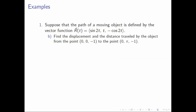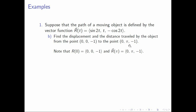Let's move on to letter B. We are asked to find the displacement and the distance traveled by the object from the vector (0,0,1) to the vector (0,π,1). The first thing we need to do is find t such that r of t equals the first vector — it is easy to see that t should be 0. Also, we need to find t such that r of t equals the second vector, and it is clear that t should be π. Hence, the displacement is that traveled from t equals 0 to t equals π, given by r of π minus r of 0.